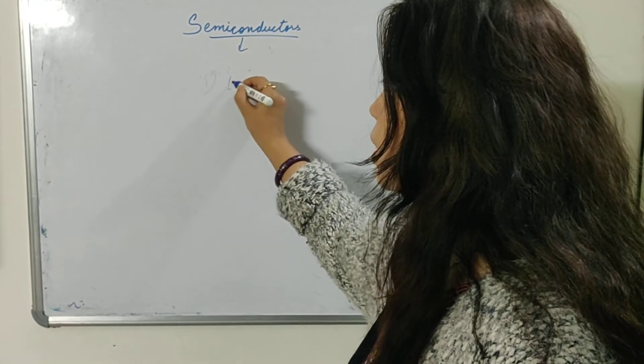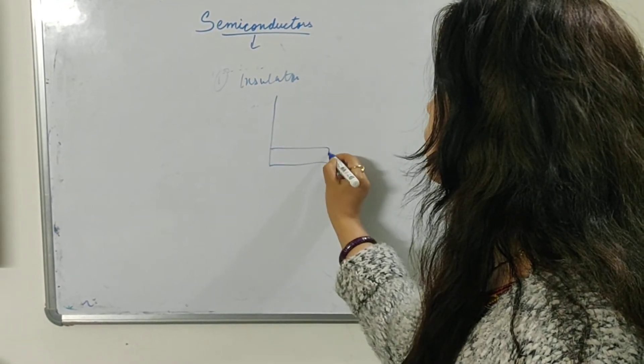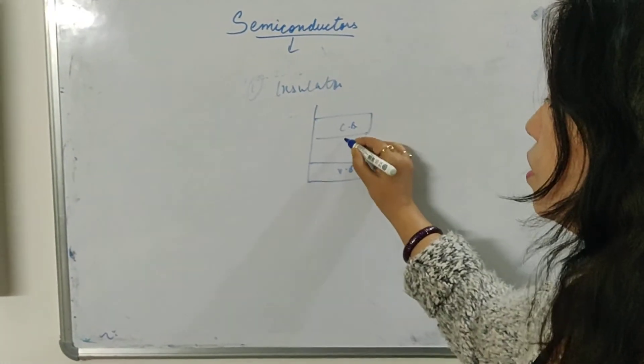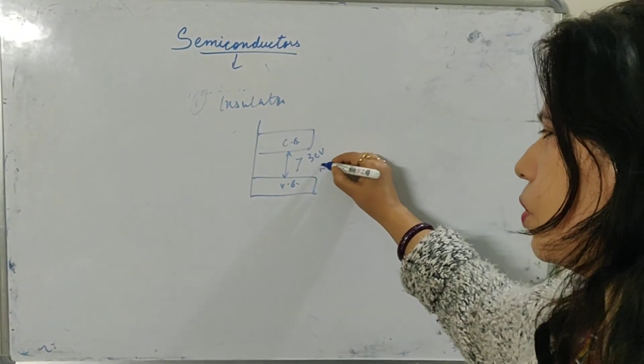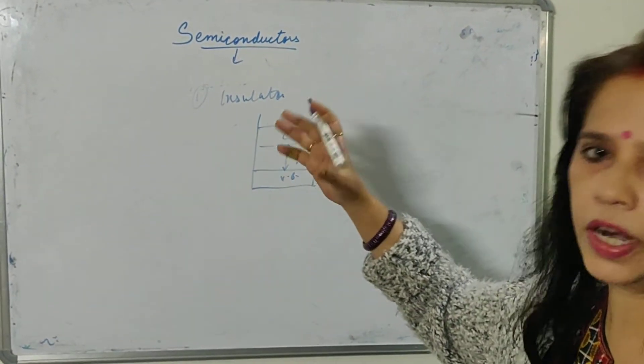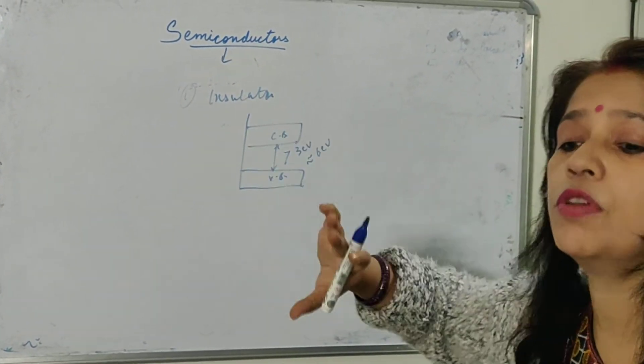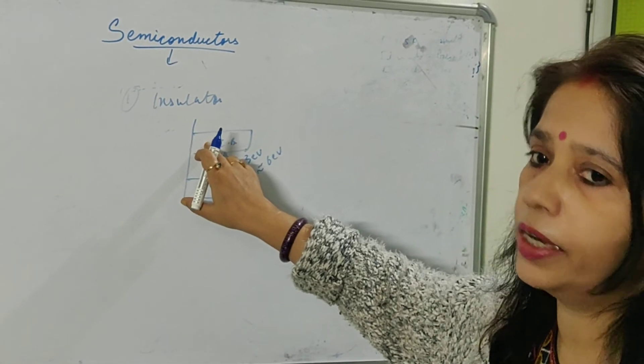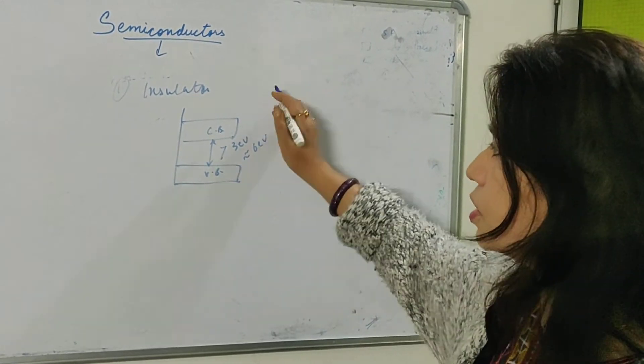So, if first I am talking about insulator. In insulator, if this is your valence band and this is your conduction band, this gap is very, very high. It is greater than 3 electron volt, almost equal to 6 electron volt, which is very high. If I take suppose wood or I take porcelain and I am adding heat to it, what will happen? Its ignition temperature will reach and it will burn out. Instead of electron gaining the energy to jump from valence band to conduction band, the whole material will burn out, but this transition will not take place. So, it cannot conduct electricity.